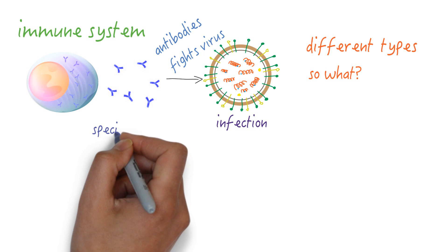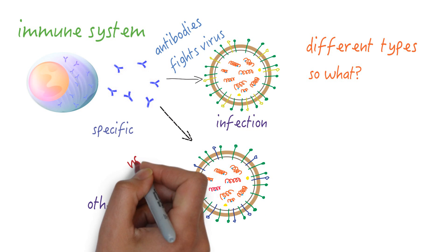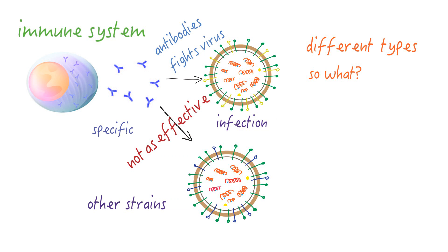The problem is, these antibodies are quite specific for that particular strain and don't work all that well for the other strains. The more different the strains are, the less effective the antibodies are at fighting it. That's why people can have the flu more than once.